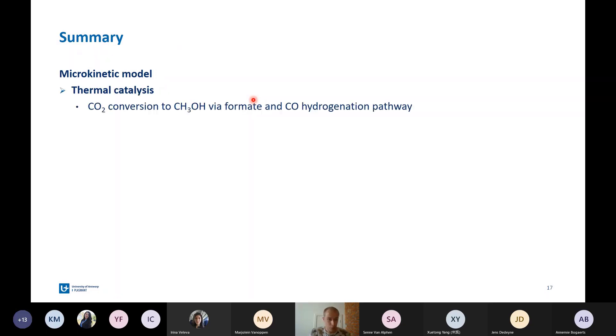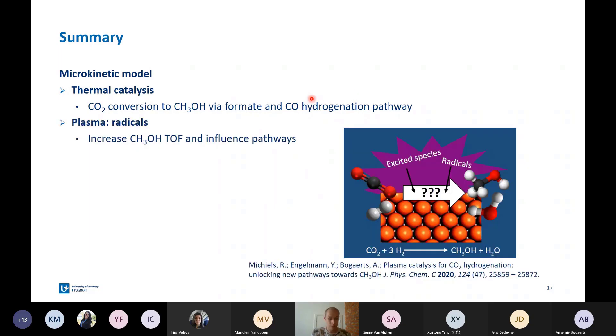To summarize, we made a microkinetic model that can study thermal catalytic conversion of CO2 to methanol, and we see that the formate pathway and the pathway through CO are the most important pathways. Then, we studied the effect of the plasma radicals. We see that there is an increase in the turnover frequency, which is good news, and an influence on the pathways. The effect of vibrationally excited species is less important under typical DBD conditions. The takeaway message is that we should aim for high CO and hydrogen content because this will be favorable for methanol formation.